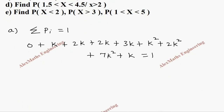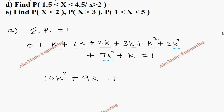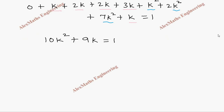While adding, the k² terms sum to 1 plus 2 plus 7, giving 10k². The k terms add up: k, then 2k, then 3k, then 5k, then 8k, then 9k. So we get 10k² plus 9k equal to 1. Rearranging this quadratic expression: 10k² plus 9k minus 1 equals 0.